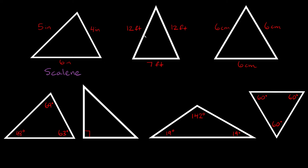Now here you can see that two of the lengths are the exact same. This length and this length of this triangle are both 12 feet long. So if you ever have a triangle that has two sides that are the exact same length, that's called an isosceles triangle. Another way that you might see that two sides are the same is you might see two little marks through them, which just tells you that these two sides are congruent — congruent just means same.